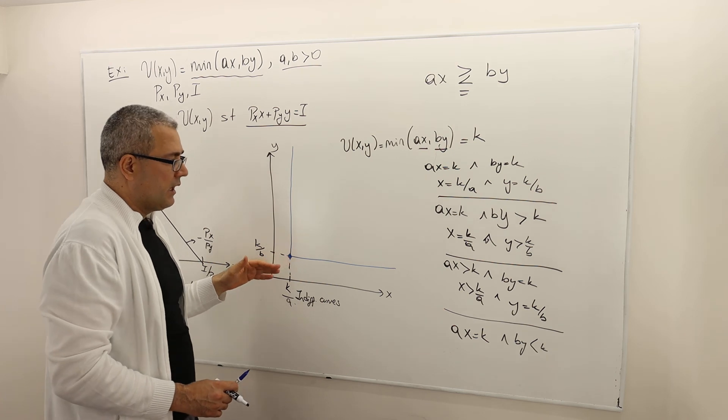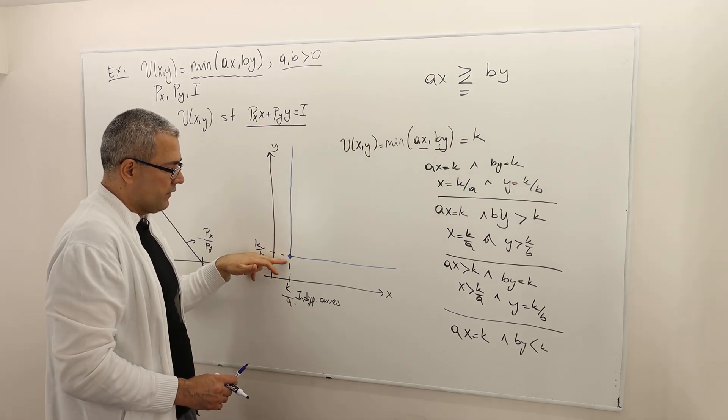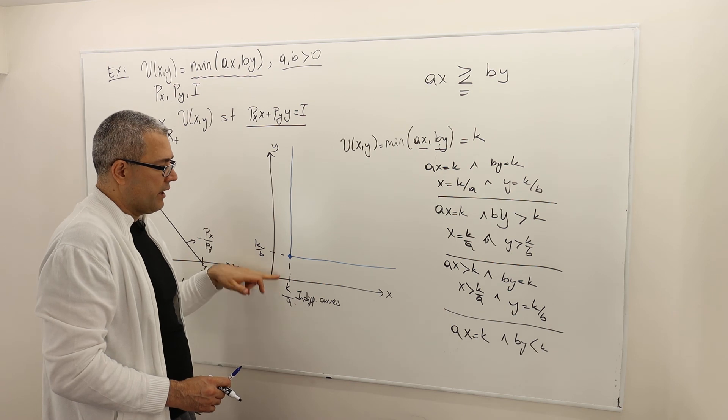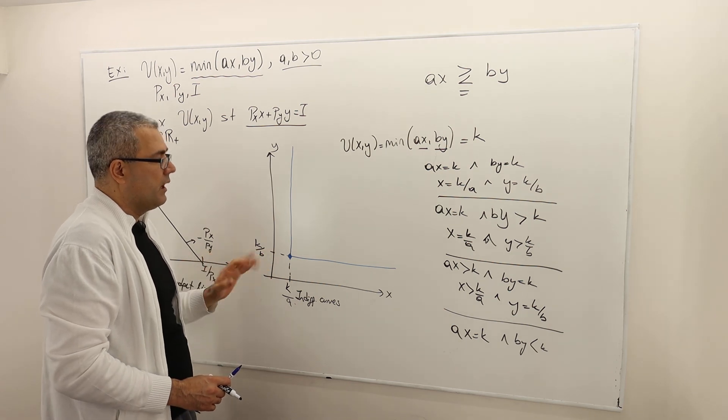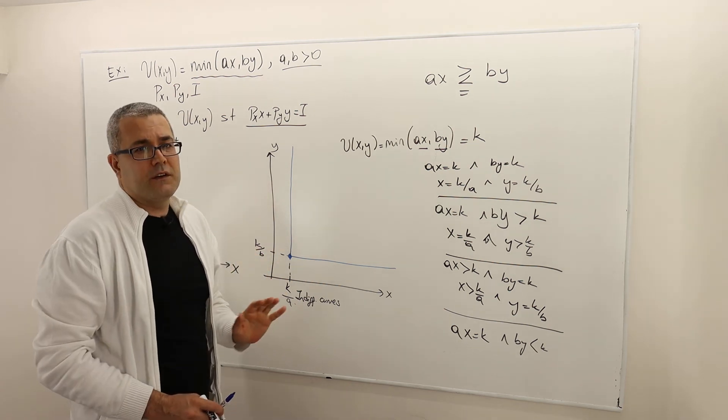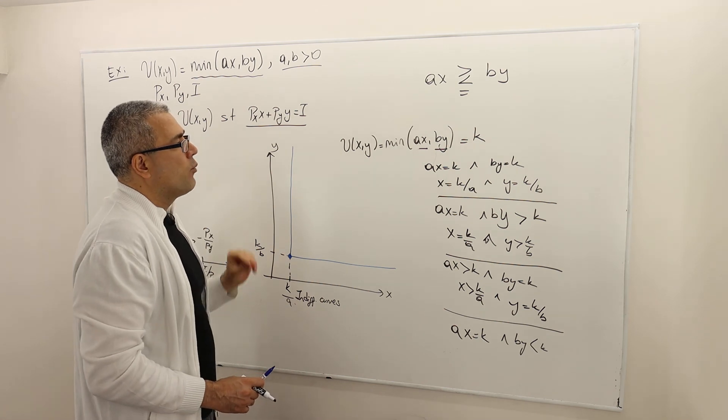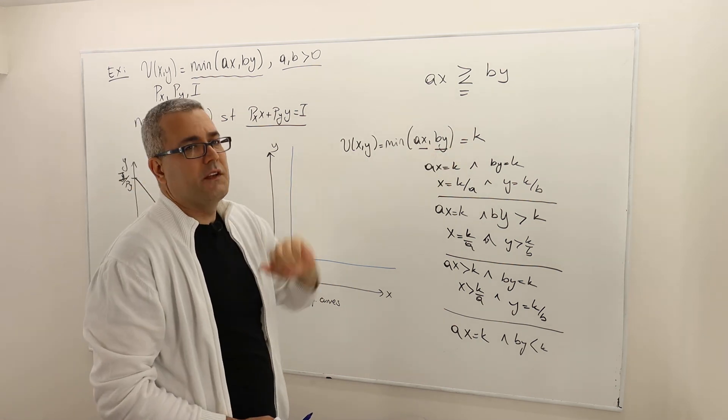So those points basically lying on this part. So X is K over A, but Y is less than K over B. So this is the indifference curve when the utility level is equal to K.